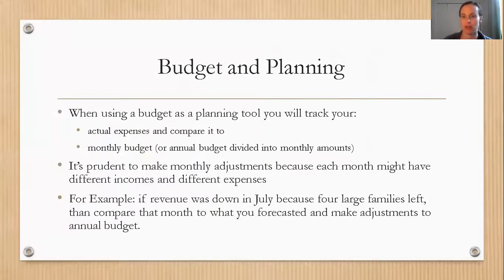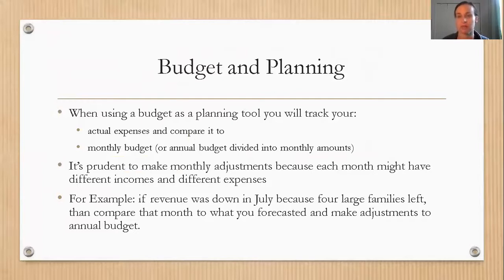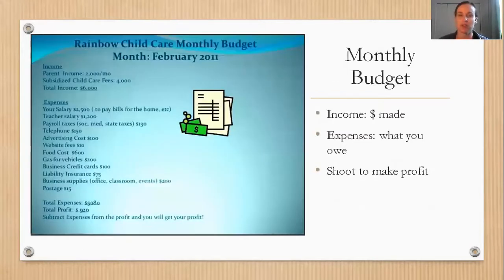You use your budget as a planning tool — tracking actual expenses and comparing them to your monthly budget. Each month may have different income and expenses. For example, if in July you had four large families each with four kids and both left, that would impact your tuition income significantly. You'd have no way of knowing in January they'd be moving. You'd then need to make adjustments — maybe not hiring subs, and having the director cover instead, to compensate for the $3,000–$4,000 loss.